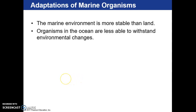We talked a bit ago about how the marine environment is more stable than the land, meaning there's not as much difference between marine environments. For example, if you're in a desert marine environment, whether you're in the Pacific Ocean, the Atlantic Ocean, or the Indian Ocean, that desert environment is all the same in all those places.